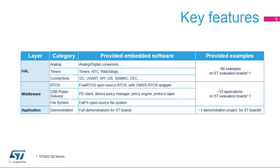The STM32Cube package is a complete embedded software offer that ensures maximum portability between all STM32 series through three software layers: HAL, middleware, and applications. The HAL layer provides an API for STM32 embedded peripherals from analog to connectivity. A rich set of examples is available to help developers start using the HAL and the product.